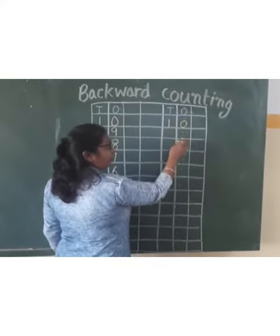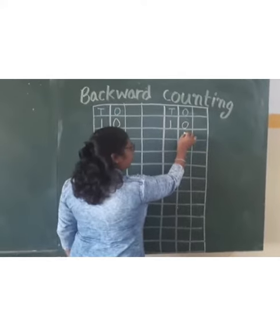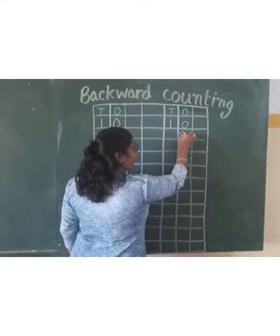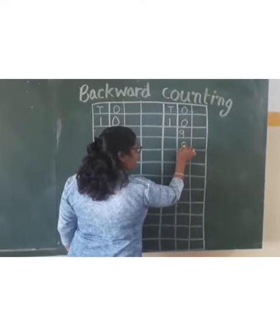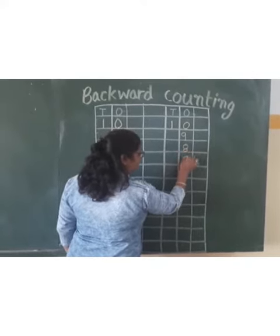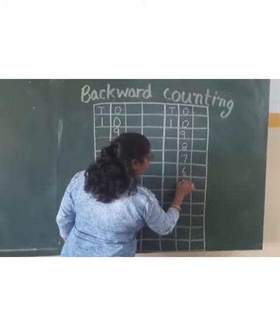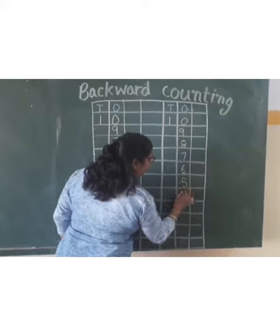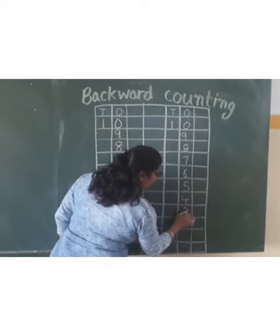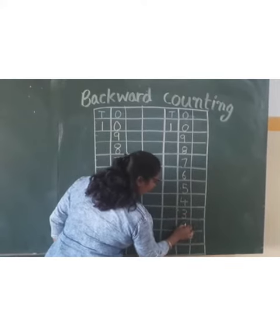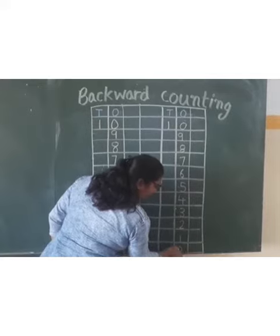Tell them we will write dots here, okay? Then 9, after 9: 8, 7, 6, 5, 4, 3, 2, 1 and 0.